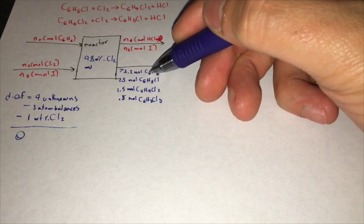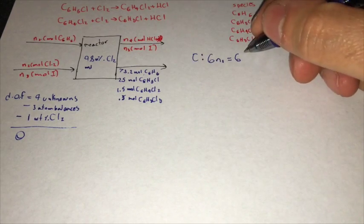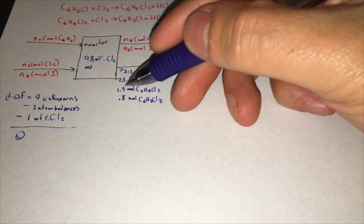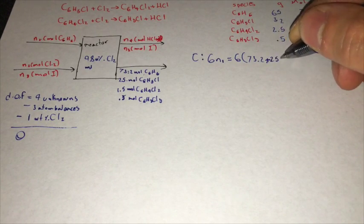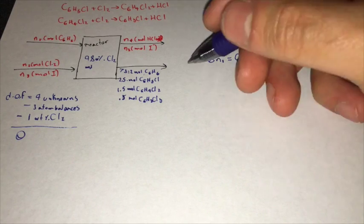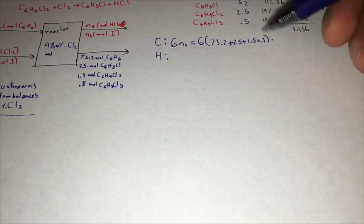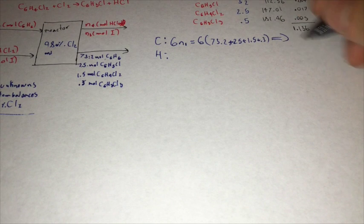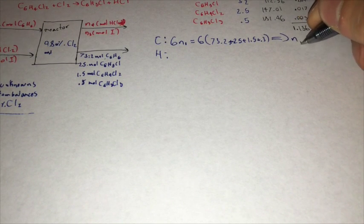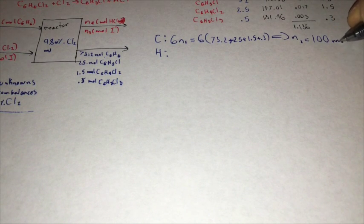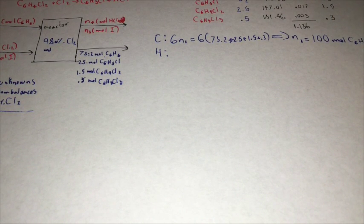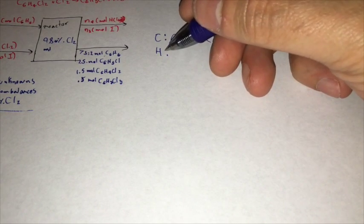We have six carbons in all these, so six times 73.2, plus 25, plus 1.5. We can solve for N1 right here, so our N1 is going to be equal to 100 moles of C6H6.